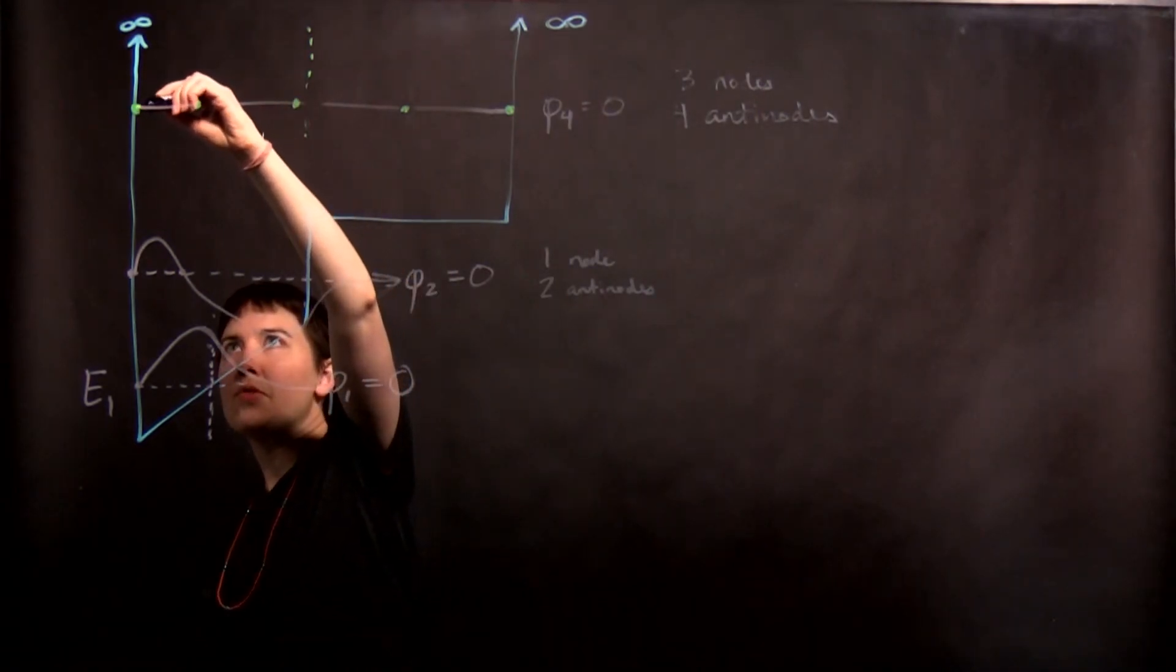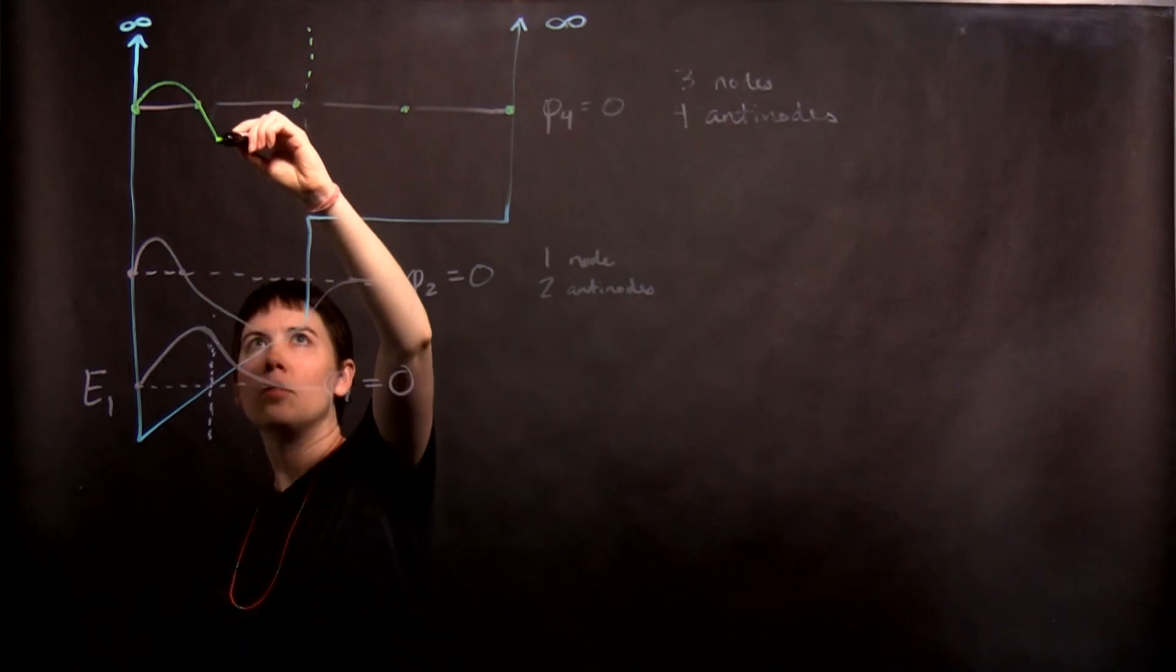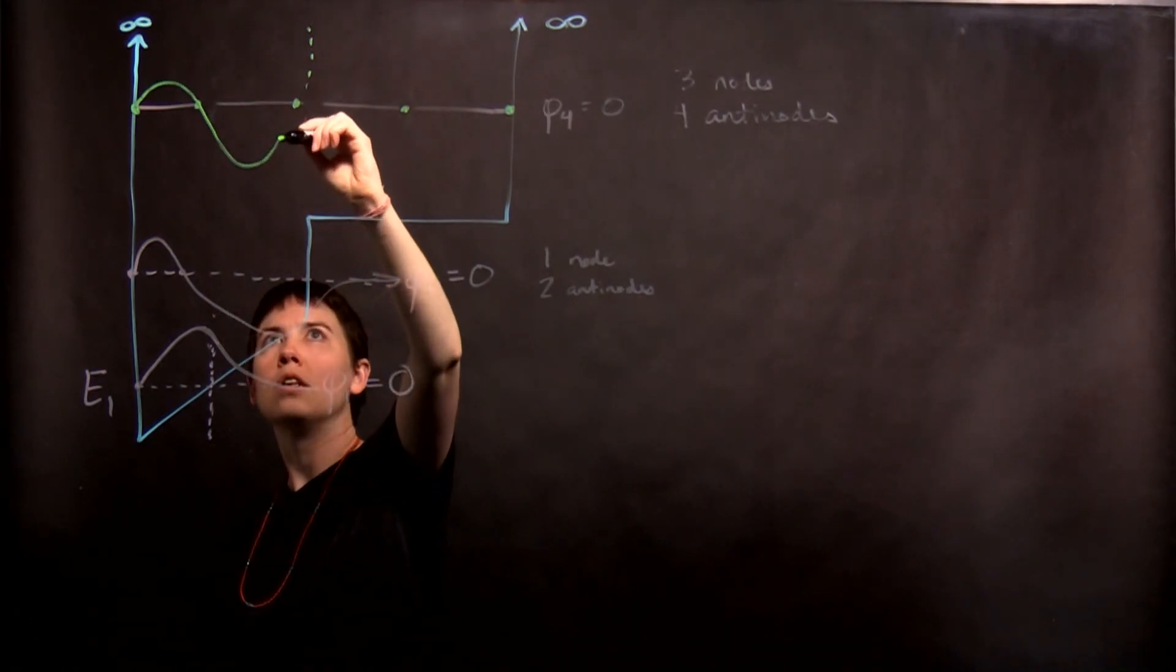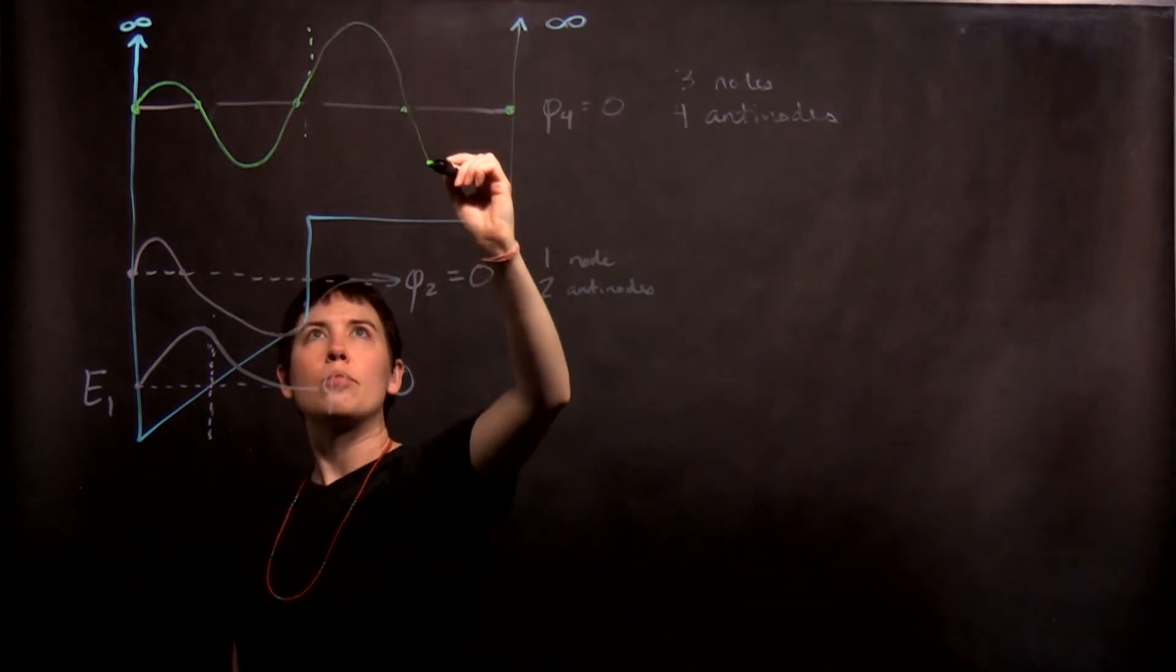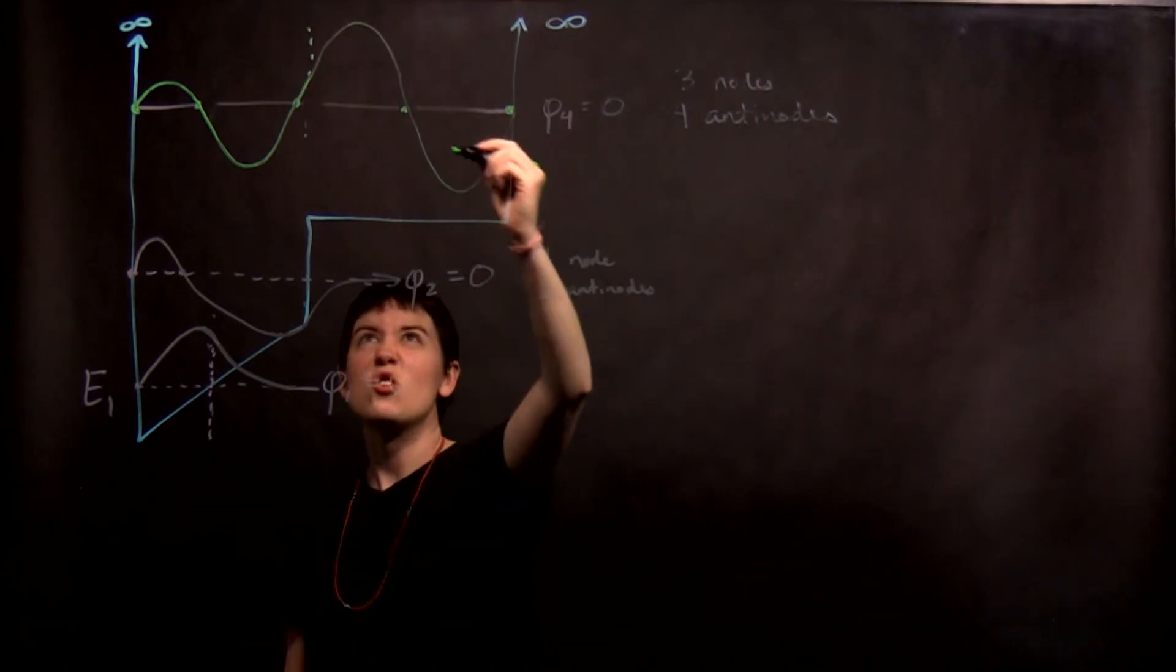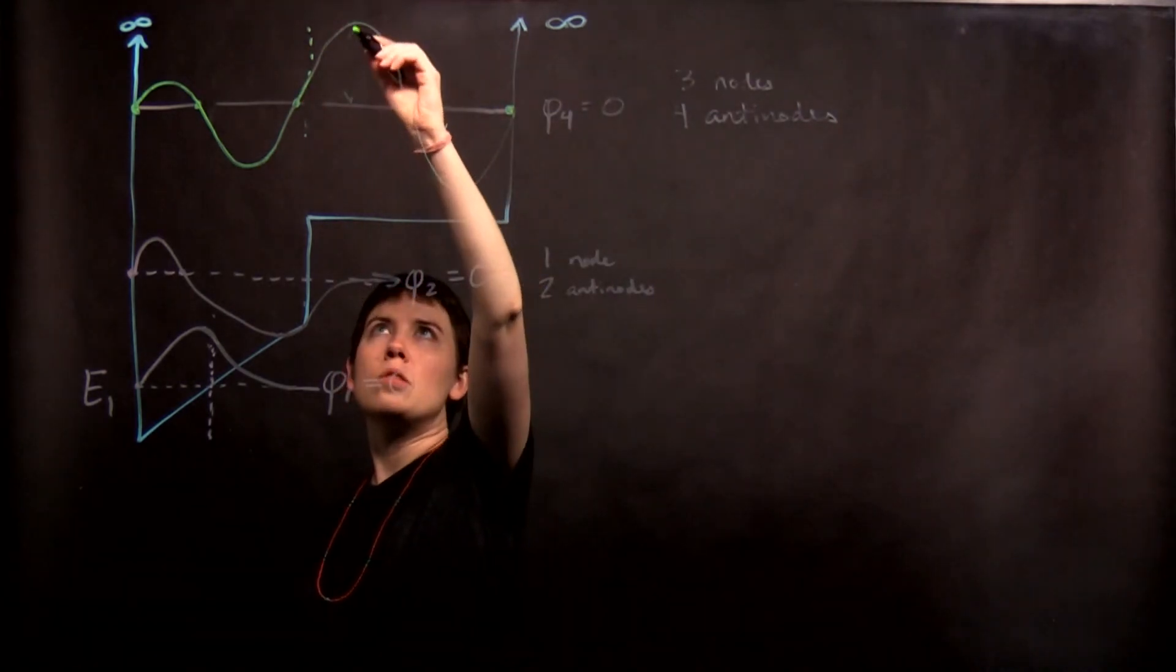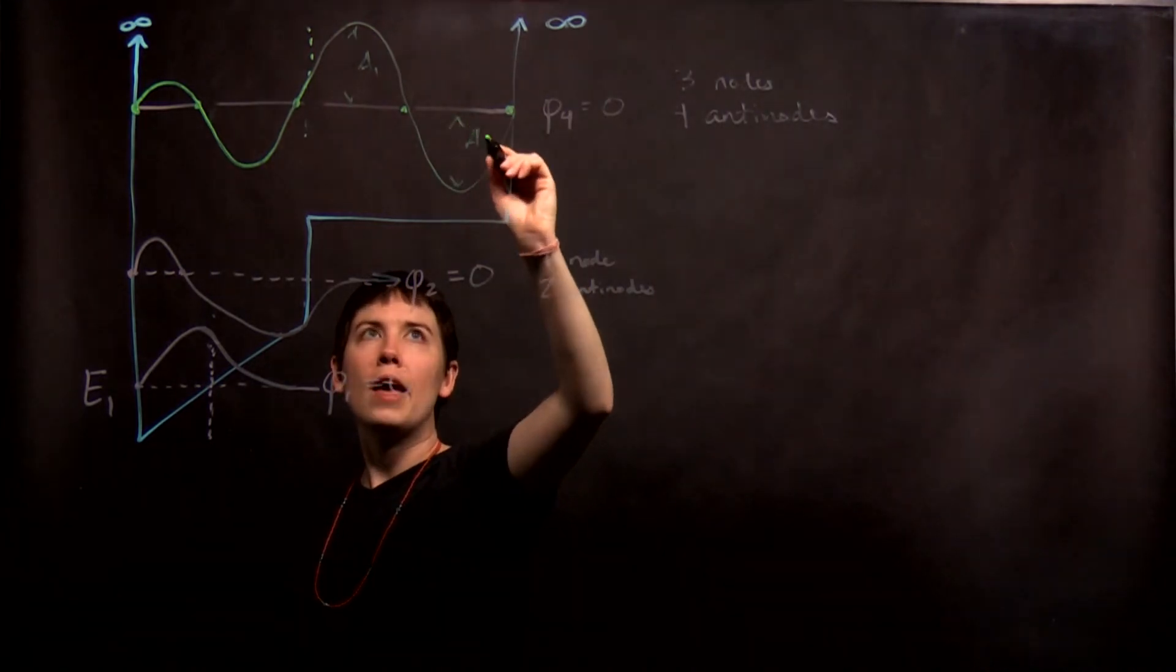So again, it starts at 0, we have a small amplitude that's getting bigger, my wavelength is getting bigger, and now my wavelength is even longer, my amplitude is even longer, but we would say that here my amplitude hasn't changed. So if I call this A_1, this is also A_1.